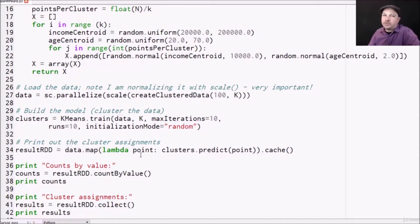This function is just going to transform each point into the cluster number that is predicted from our model. So again, we're just taking our RDD of data points. We're calling clusters.predict to figure out which cluster our k-means model is assigning them to, and we're just going to put the results in our result RDD.